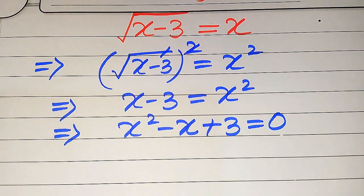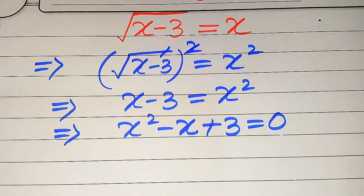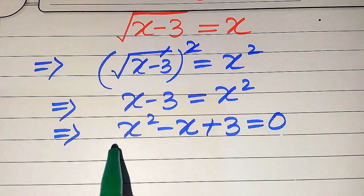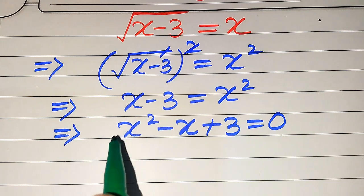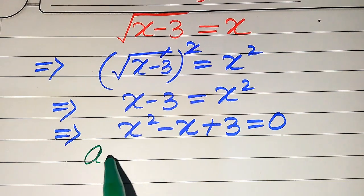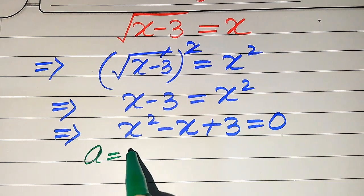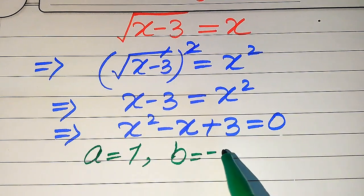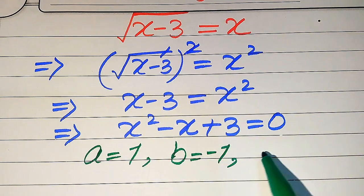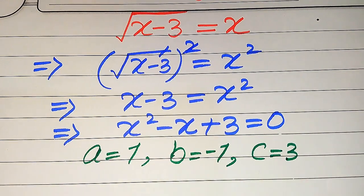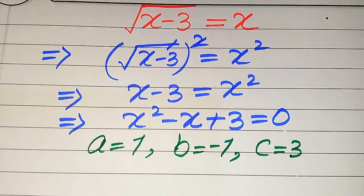For the quadratic formula, we first write the coefficients of this equation. The coefficients are: a equals 1, b equals minus 1, and c equals 3. These are the three coefficients of the given equation.